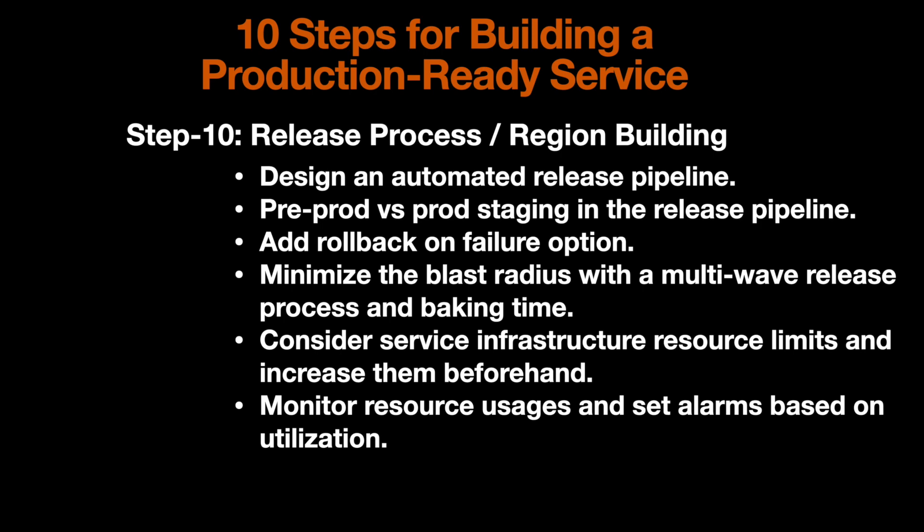After testing in pre-prod, we let changes go through production regions or instances. If anything goes wrong, we should roll back automatically — that's why we need to implement a rollback-on-failure mechanism in our pipeline. We also need to minimize the blast radius using a multi-wave release process. For example, if releasing in 10 regions, we should not release to all regions simultaneously — we need to progress step by step.